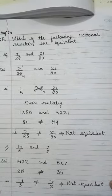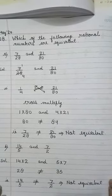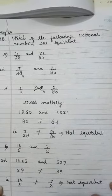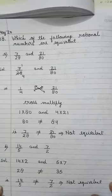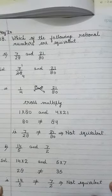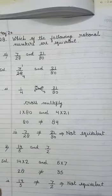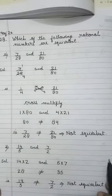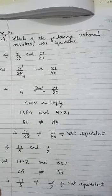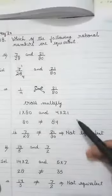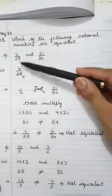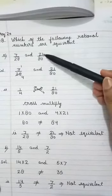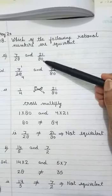Now let's look at question number 8. Here you have to identify which of the following rational numbers are equivalent. You are given 2 rational numbers and you have to tell whether they are equivalent or not. So your question is 7 by 28 and 21 by 80.